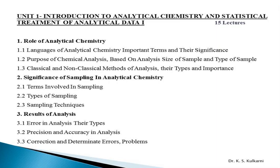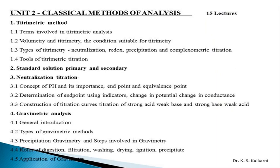Then you have to learn classical and non-classical methods of analysis, their types and importance. In the next part you have to learn the significance of sampling in analytical chemistry — different terms, different types of sampling, and sampling techniques. In the third part you have to learn result of analysis: what is error and their types, then precision and accuracy, then correction and determinate error, and you have to solve some numerical problems.